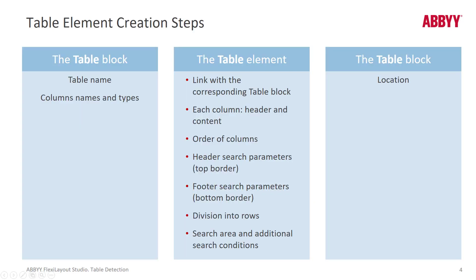Creation steps: the first thing you need to do in FlexiLayout Studio is to create a table block and include the column names. The column names can have no spaces or special characters. Go from left to right. Then you create your table element. The first thing you do when you create your table element is link it to your table block, and all the column names come in from the table block. If you forgot any, you've got to go back to the table block.